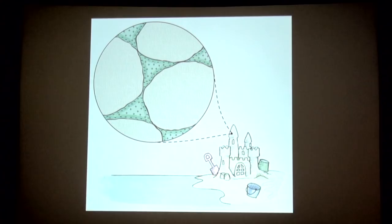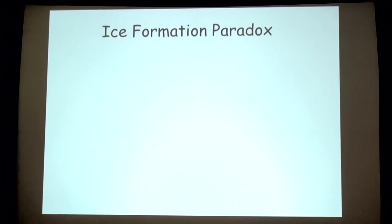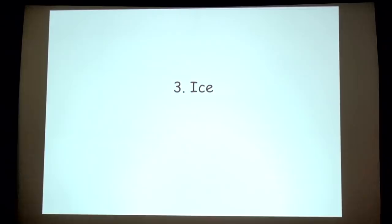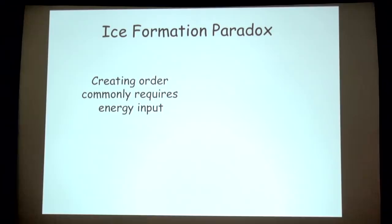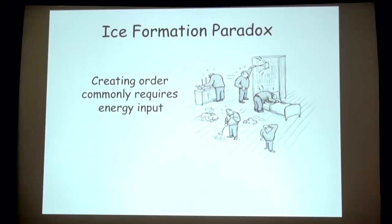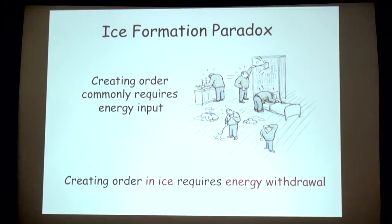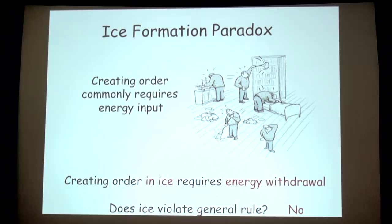Next: ice. We find ice all around the cosmos, and there's a paradox I'd like to start with. Usually if you want to create order, you have to put energy in — like cleaning your room. But in the case of ice, you put it in the freezer and it pulls out energy, which seems thermodynamically opposite to what you'd expect. So does ice really violate the general rule? Let's look at how ice might actually form.